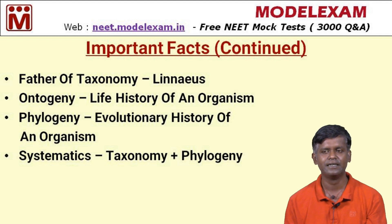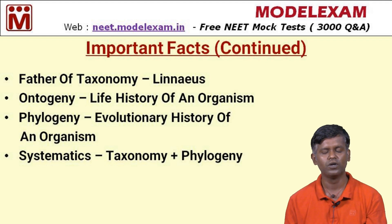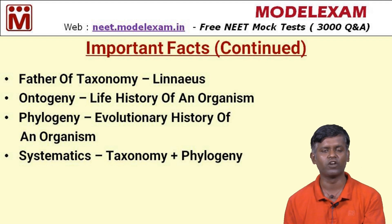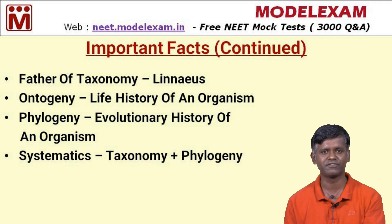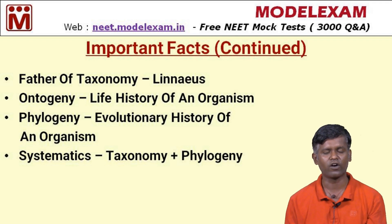Systematics is the combination of taxonomy and phylogeny. There is a principle called 'ontogeny recapitulates phylogeny,' meaning the life history of an organism is derived from its evolutionary history. Based on ontogeny patterns, phylogeny patterns vary.